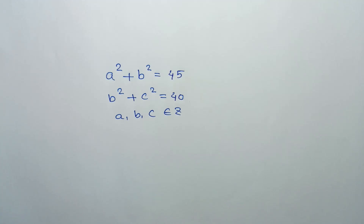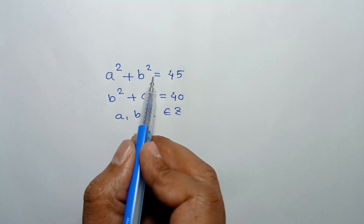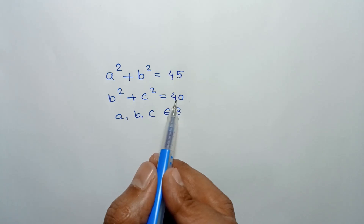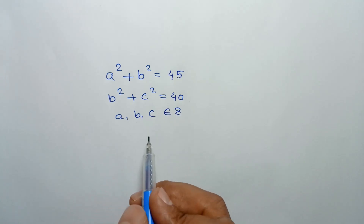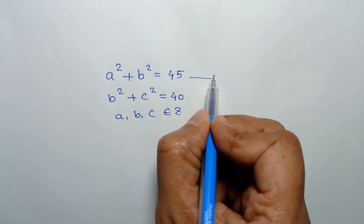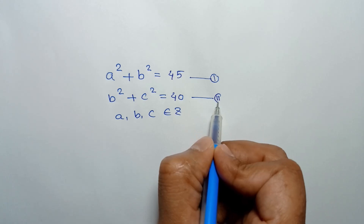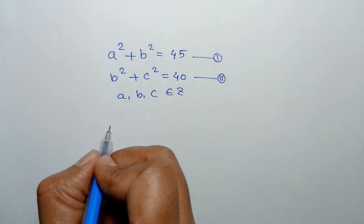Hi everyone. In this video I am going to show how to find the value of a, b, c where a squared plus b squared is equal to 45 — call it equation one — and b squared plus c squared is equal to 40 — call it equation two. a, b, c are integers.